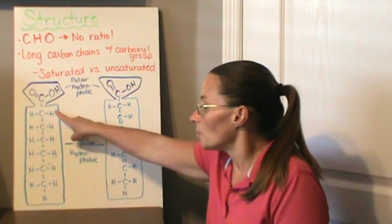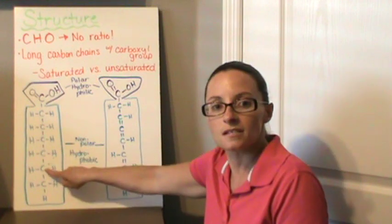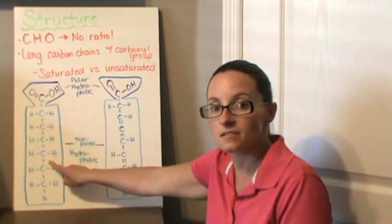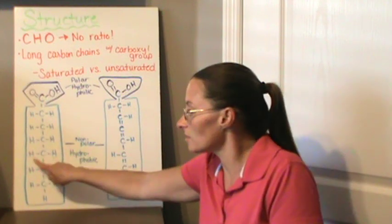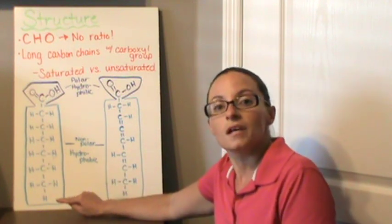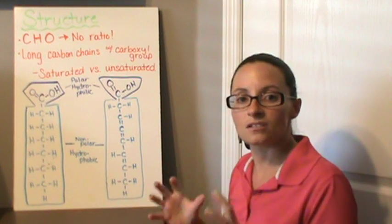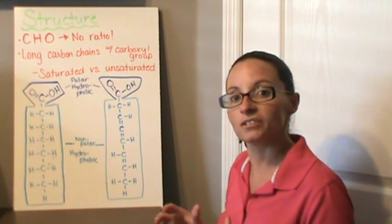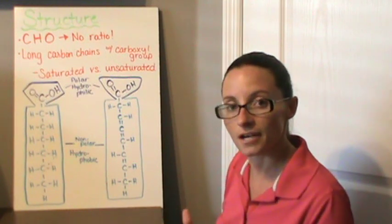What you'll end up with is long chains that either have single bonds of carbon with them, and then as many hydrogens as can fit around will. This is what's considered a saturated fat. Every single spot that a hydrogen could be filling in, it's filled. So it is fully saturated with hydrogens.